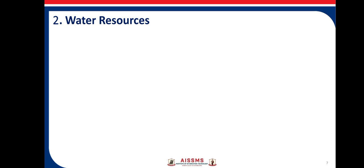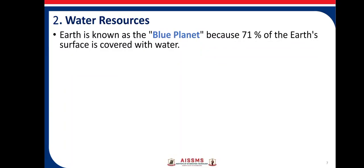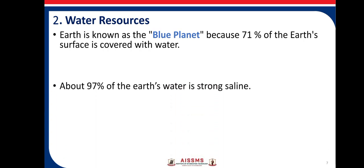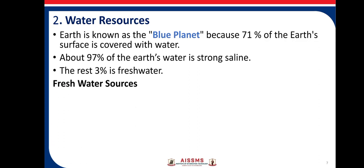The next natural resource is water resources. As we know, earth is a blue planet because 71% of the earth's surface is covered with water. About 97% of total water is saline, meaning it is in the form of salt water — sea water or ocean water. The remaining 3% is fresh water, and of that fresh water, only 1% is pure and usable.